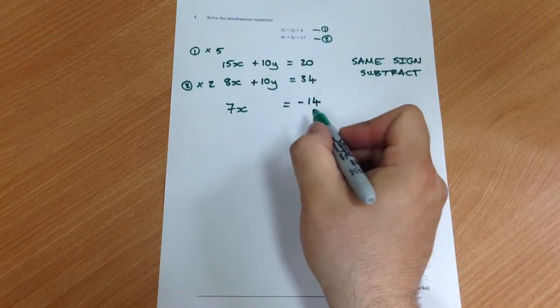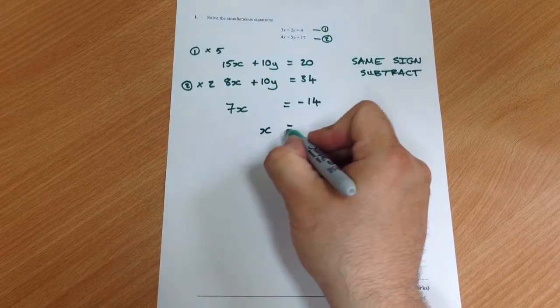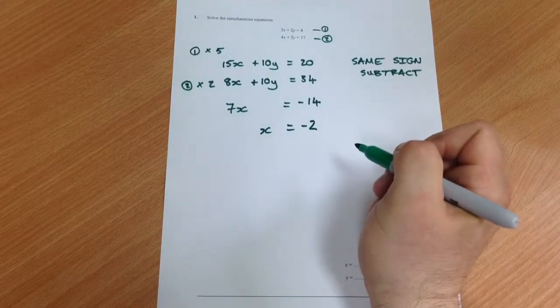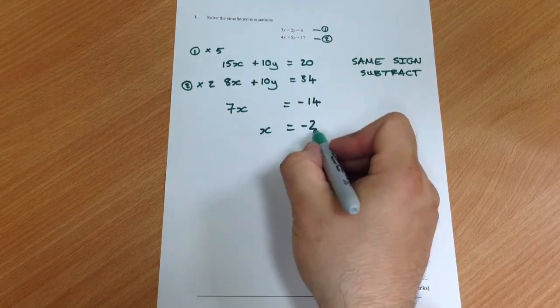Now it's fairly straightforward to solve. Divide through by 7, x equals negative 2. So now that we know what x is,